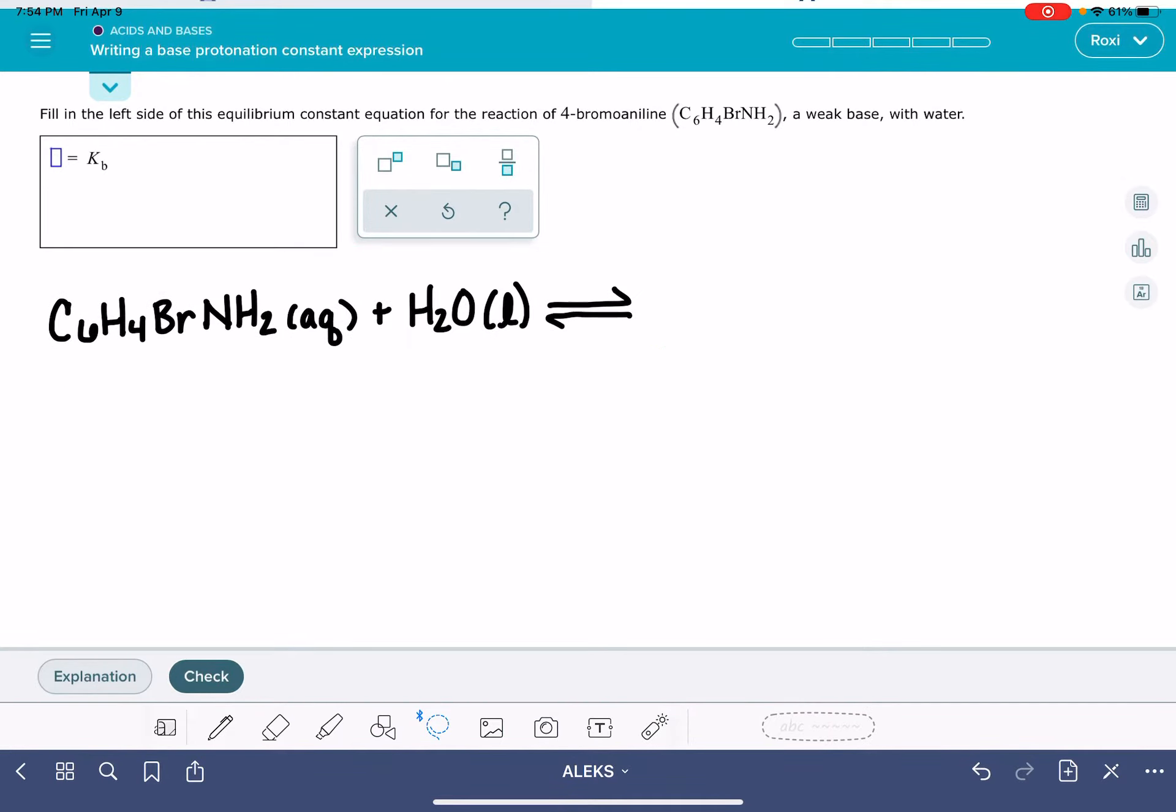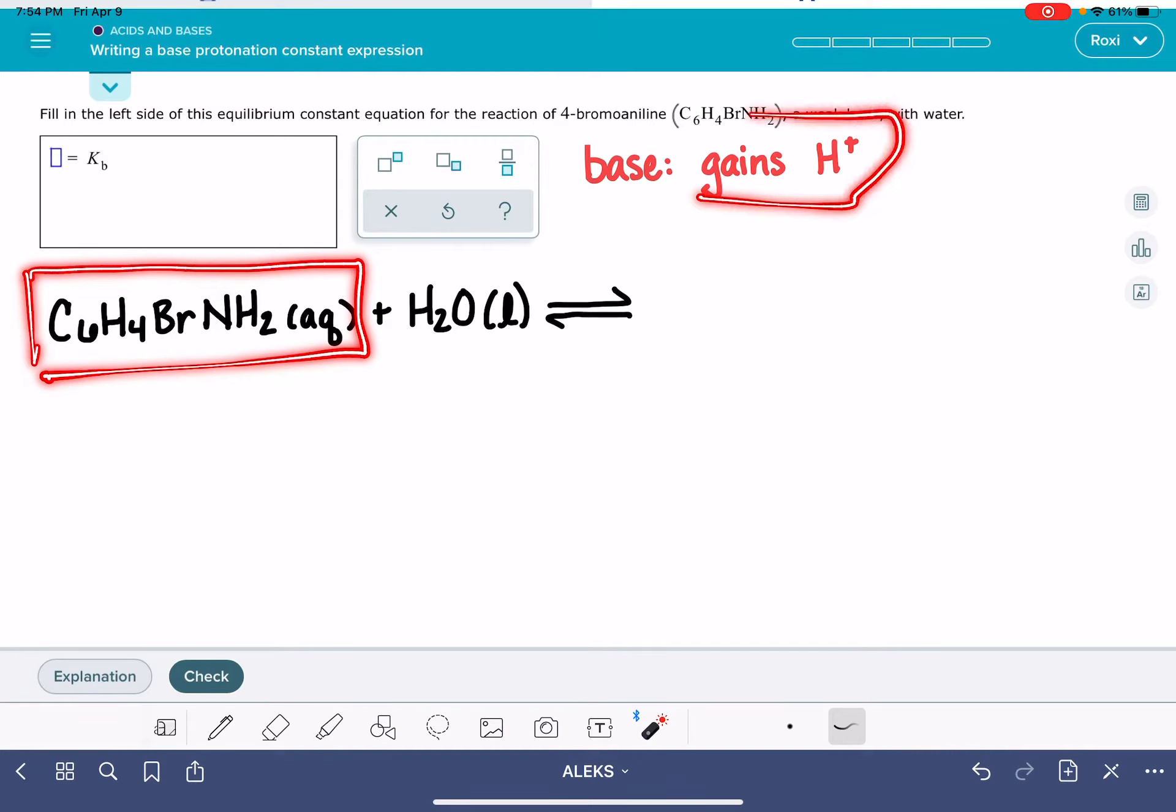Now your job here is that you have to predict the products of this reaction. The problem is telling you that this is a base, and a base, by definition, is a molecule that gains, or accepts, an H plus from the other molecule in the reaction. So this molecule right here is going to be gaining an H plus.